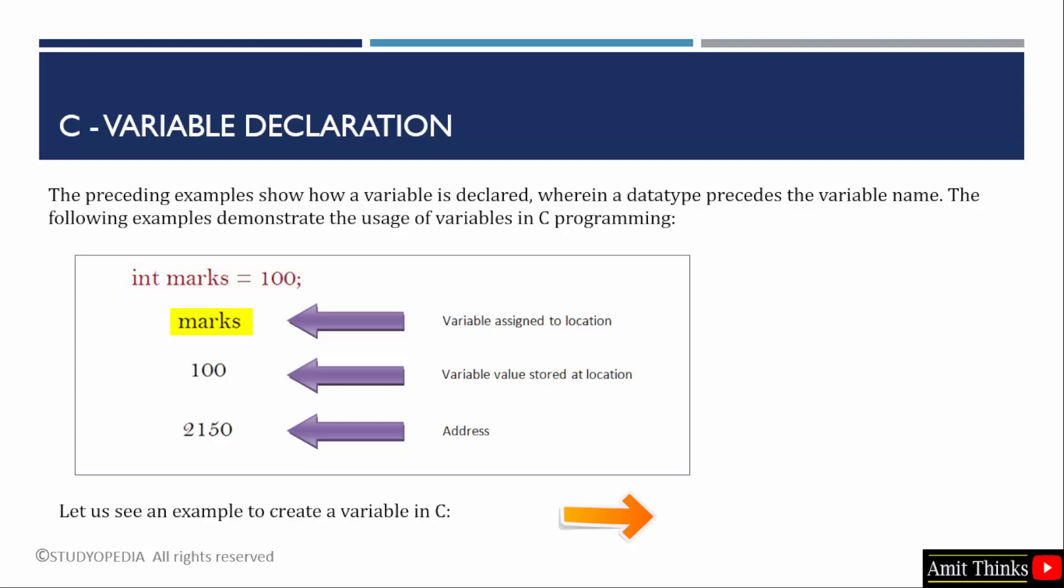In this case, the variable assigned to the location is marks. The value of the variable is 100 that gets stored at the location. And an address is also assigned. Here, the address of a variable is a unique identifier that indicates where the variable is stored in the computer's memory. This is the memory address.